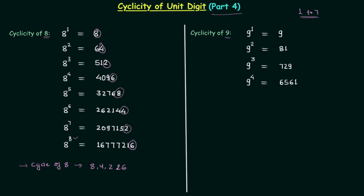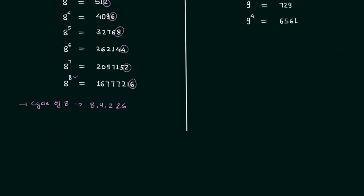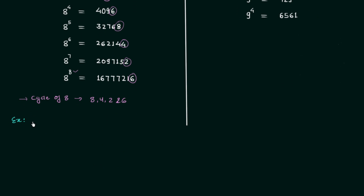Now let's solve one example to understand this in a much better way. In this example we have to find out the digit at the unit place of the number 18 raised to power 19. The number is 18 and the power is 19, and we need to find out the digit at the unit place. We learn cyclicity only to obtain the digit at the unit place for numbers having large powers. The digit at the unit place will not depend on the digit 1 at the 10th place — it will only depend on the digit at the unit place. So 8 raised to power 19 will have the same unit digit as 18 raised to power 19.